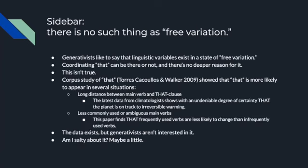A little sidebar: there is no such thing as free variation — that is, randomness. Generativists, Chomskyans, like to say that linguistic variables exist in a state of free variation. For example, the coordinating 'that' can be there or not be there, and there's no deeper reason for it — it's just random. But that's not true, and we can prove it.